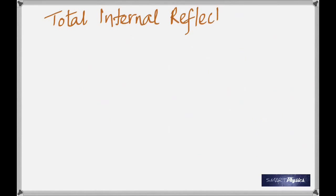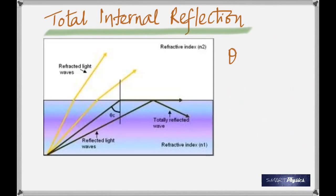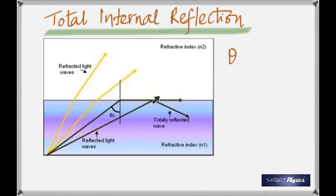Internal reflection. Take a look at this. It's going from water into air — does it bend away? Yes. If you keep on increasing the angle of incidence, it keeps bending further away. And for a particular angle of incidence, the angle of refraction becomes 90 degrees. That angle of incidence is called the critical angle — it is the angle of incidence for which the angle of refraction becomes 90 degrees.